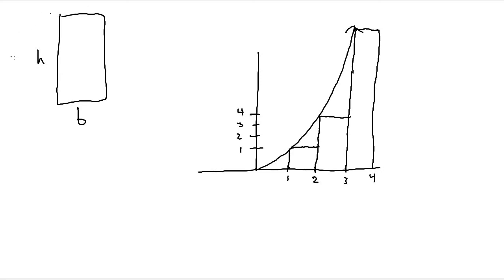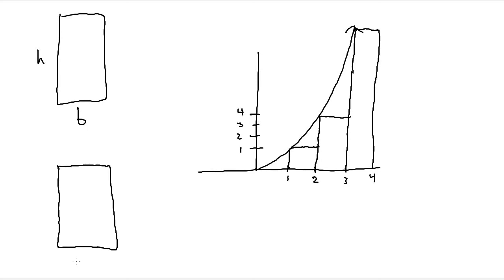To calculate the area of a rectangle we do base times height. Since we're looking at rectangles on graphs, the base is called delta x. Delta x is just the distance from one x value to another. For example, looking at the center rectangle, the base goes from x equals two to three, so delta x is one, because three minus two is one. If the rectangle went from two to four, delta x would be two; from two to five, delta x would be three.